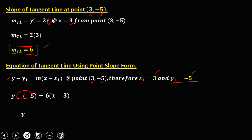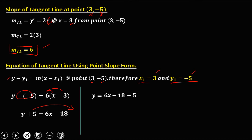Simplify: double negative becomes positive 5. Distribute to get 6x minus 18. Then transpose positive 5 to the right, which becomes negative 5. So y equals 6x minus 18 minus 5, which gives negative 23. Therefore, the equation of the tangent line is y equals 6x minus 23.